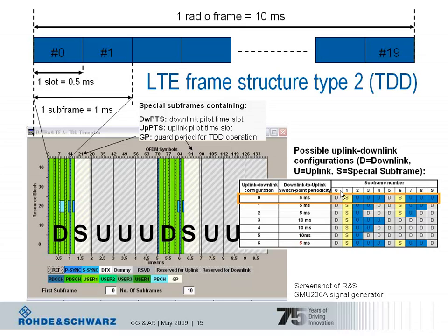The gray subframes shown in the screenshot represent uplink transmission — they are available for uplink in this specific uplink-downlink configuration 0. For TDD, certain layer 1 and layer 2 downlink control channels are also defined at the beginning of each subframe, and primary and secondary synchronization signals plus a physical broadcast channel are defined as well.